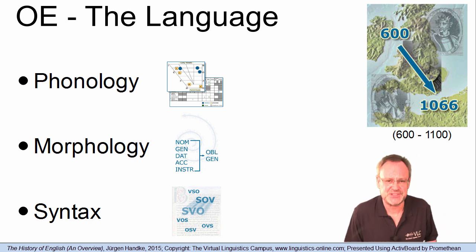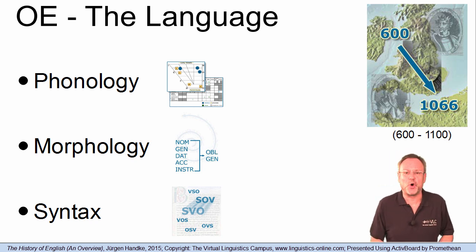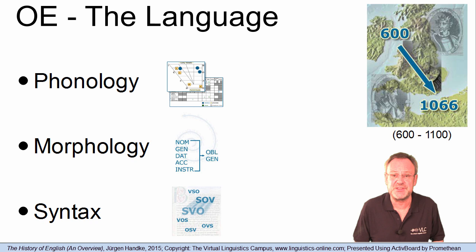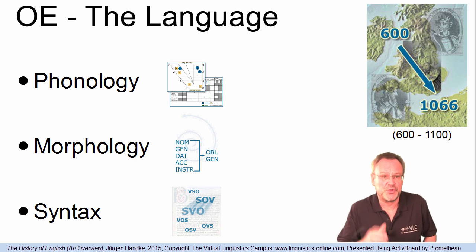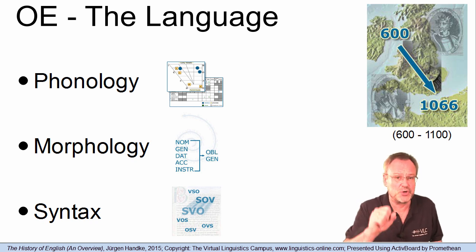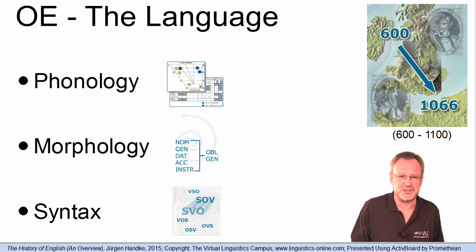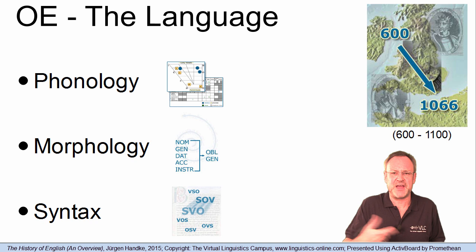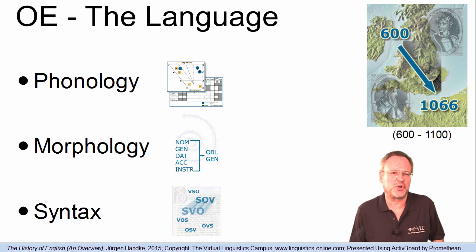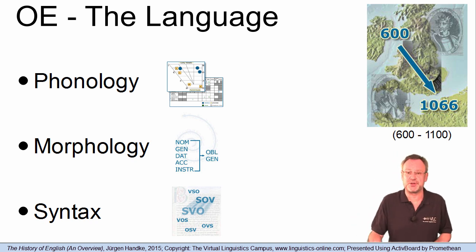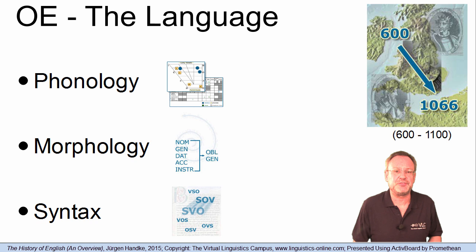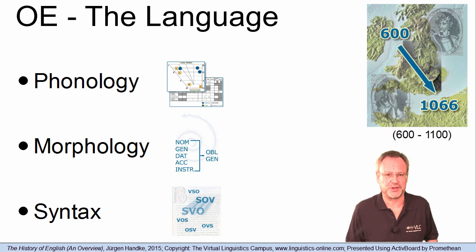Like its ancestor languages, Old English was synthetic, with numerous agglutinating tendencies. It inherited most phonological and morphological properties from Germanic and had a relatively free word order.